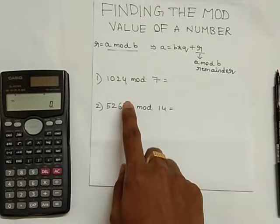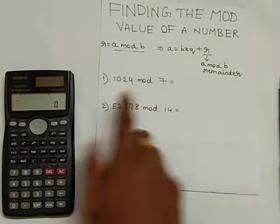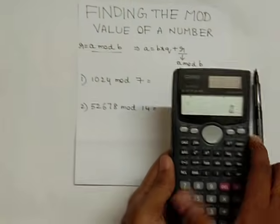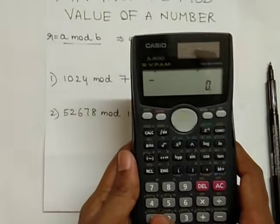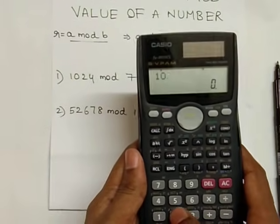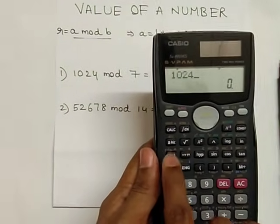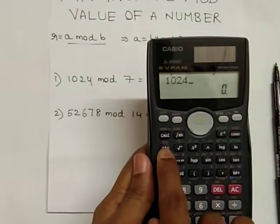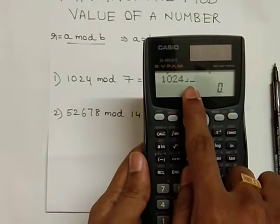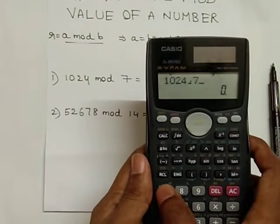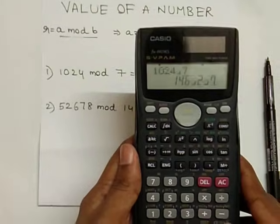In our first example, 1024 mod 7, take the calculator. Enter the value 1024. Now press this A by B C button. You can get the symbol on the screen. Enter the value 7, then press equal to.